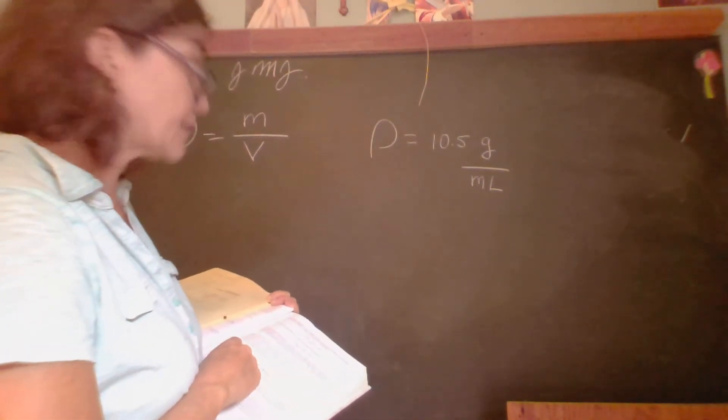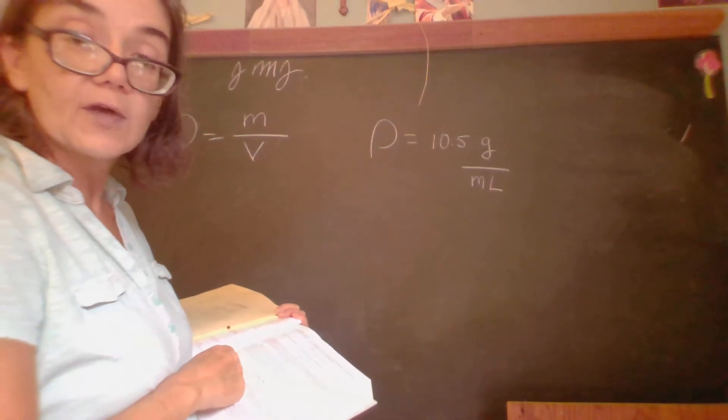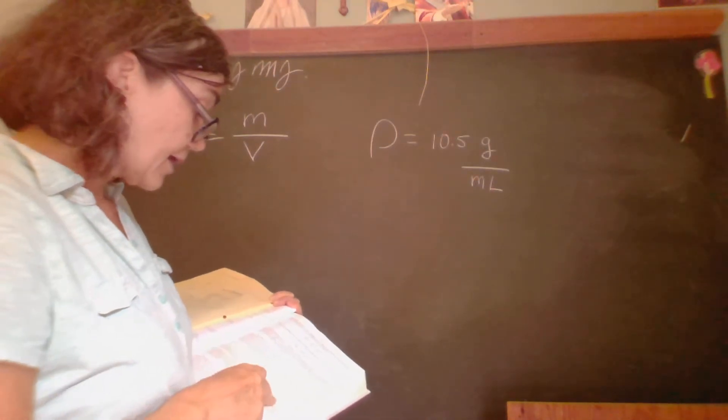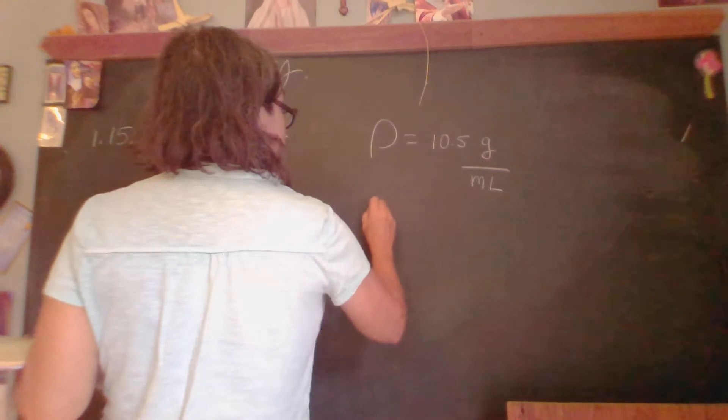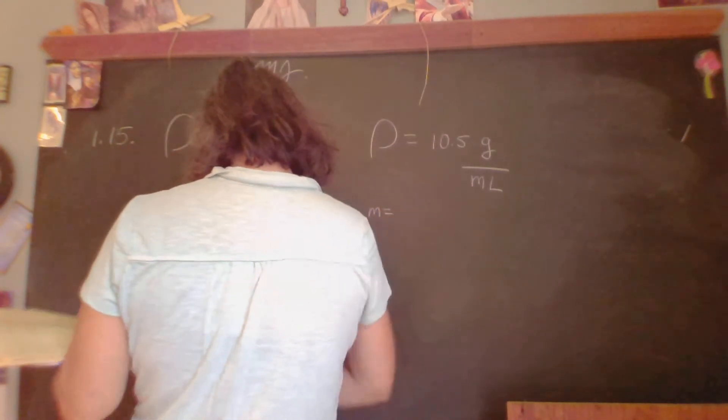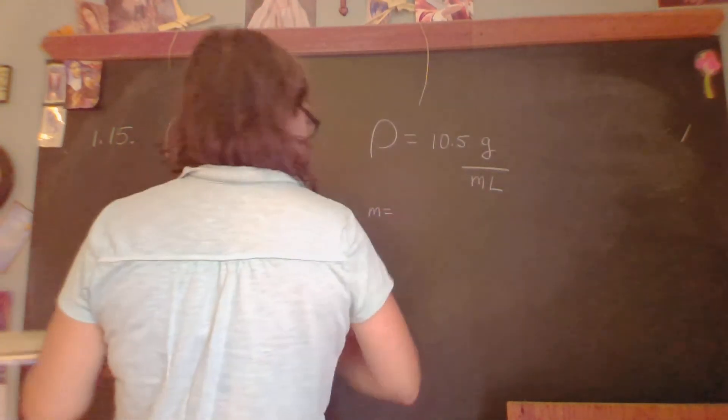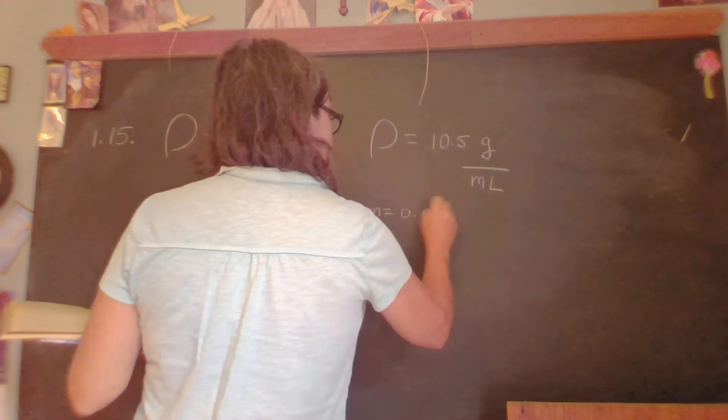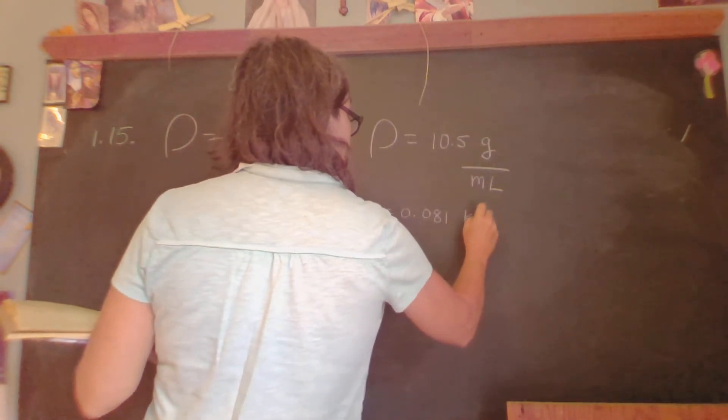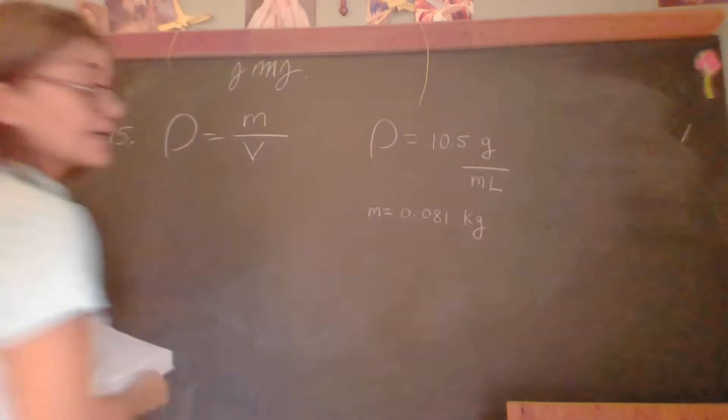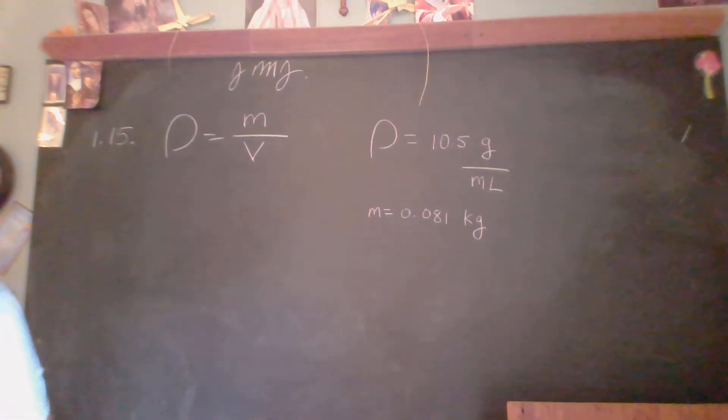So 10.5 grams per cubic centimeter is the same as 10.5 grams per milliliter. Now we know that the mass is 0.081 kilograms. But if we look at our units of density, that's given in terms of grams. So what do we need to do?